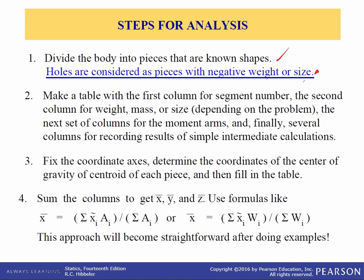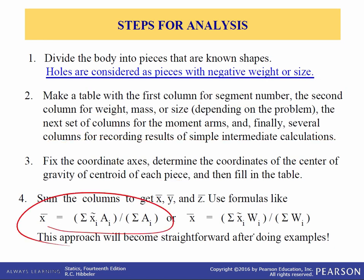The next step is to make a table. The first column is the segment number, numbered sequentially A, B, C, D. The second column is the weight, mass, or size depending upon the problem. The next set of columns are for the moment arms, and finally we have columns that record results of simple intermediate calculations. Fix the coordinate axes, determine the coordinates of the center of gravity or centroid of each piece, fill in the table, and then sum the columns to get x-bar, y-bar, and z-bar using our composite body formulas.